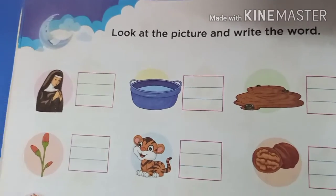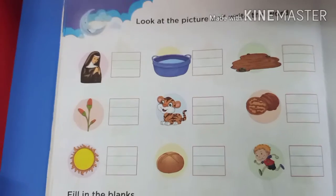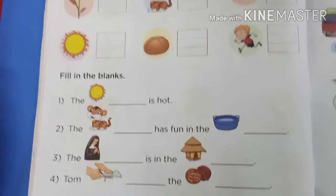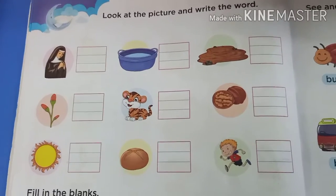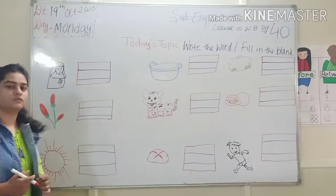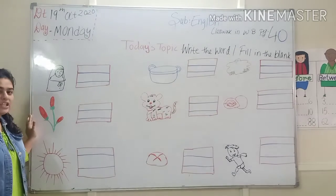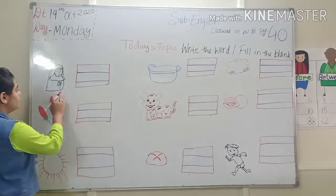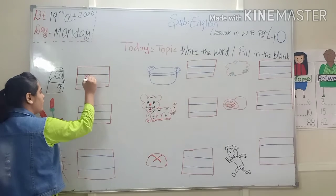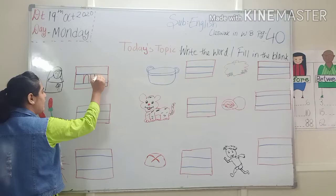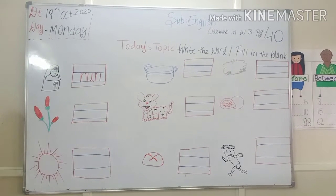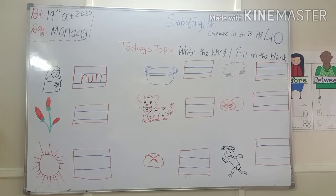Look at the picture and write the word. And on the same page the next topic is 'Fill in the Blanks.' First we will look at the pictures and write the words, then we will complete 'Fill in the Blanks.' Now kids, look at the picture and write the word. Write with me and complete your class work with me.